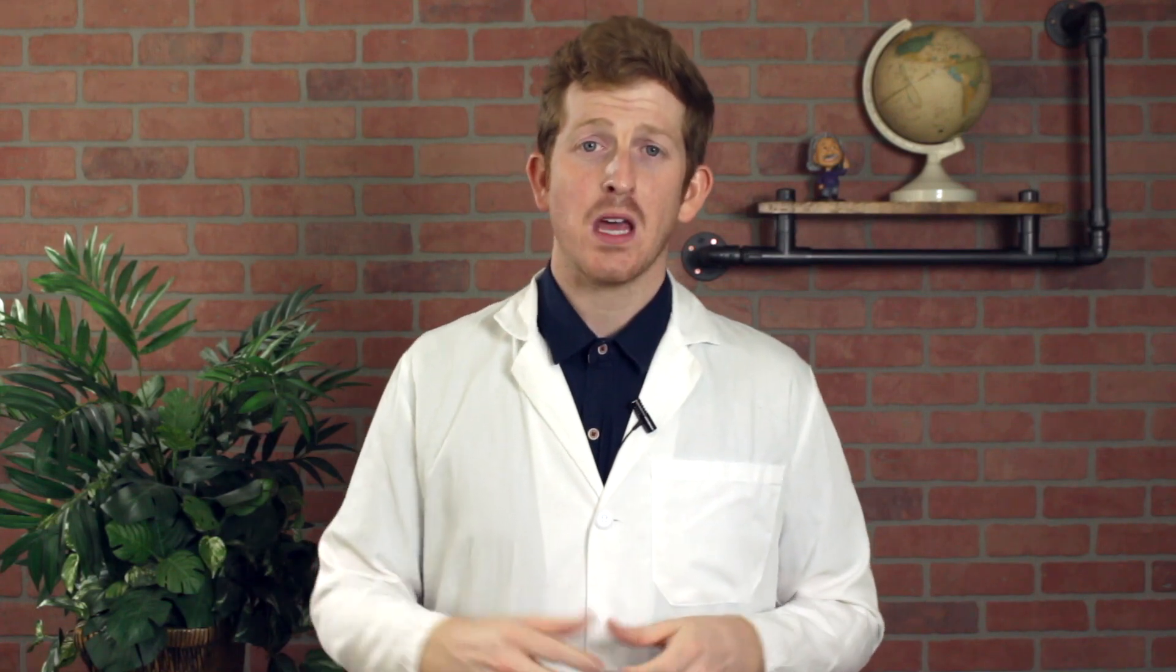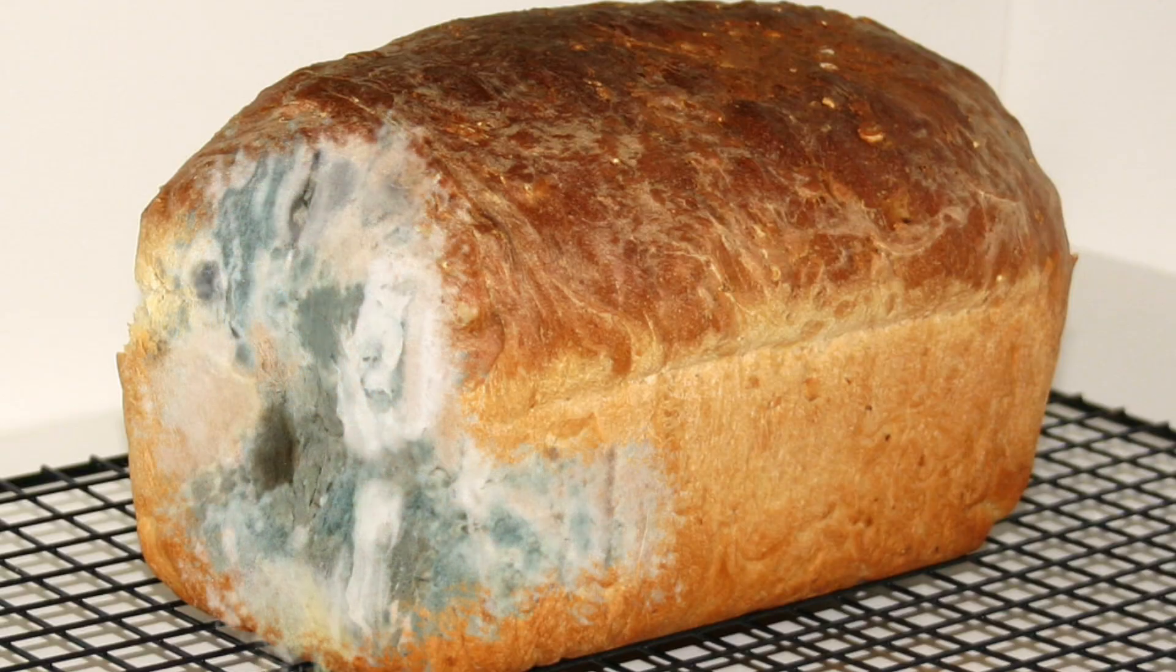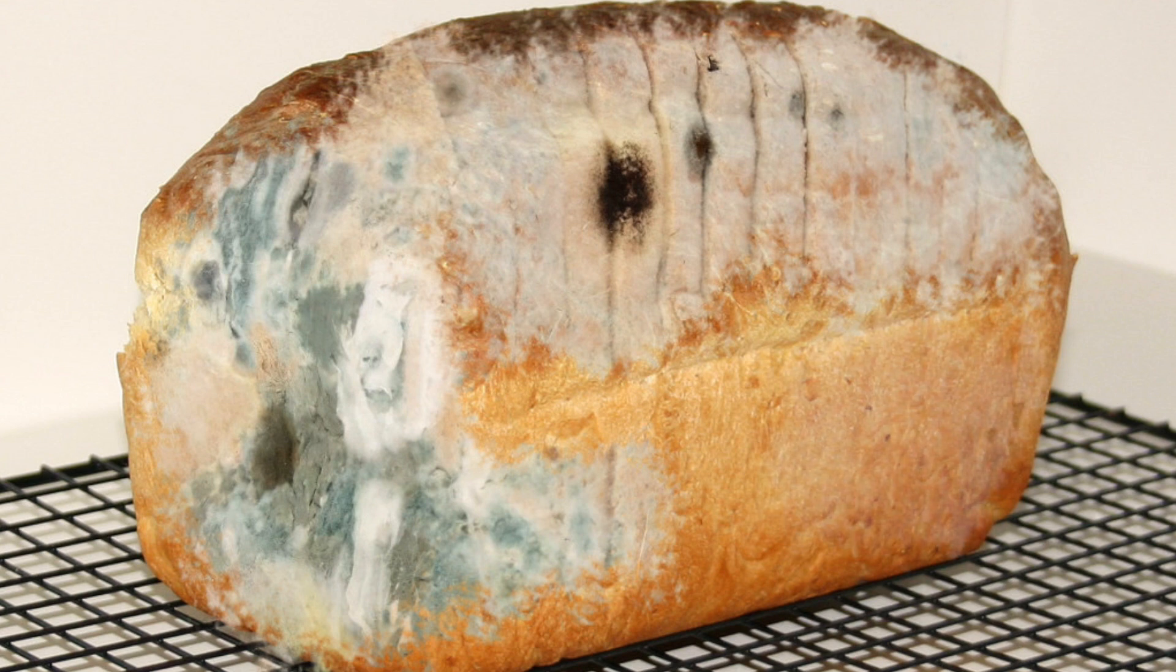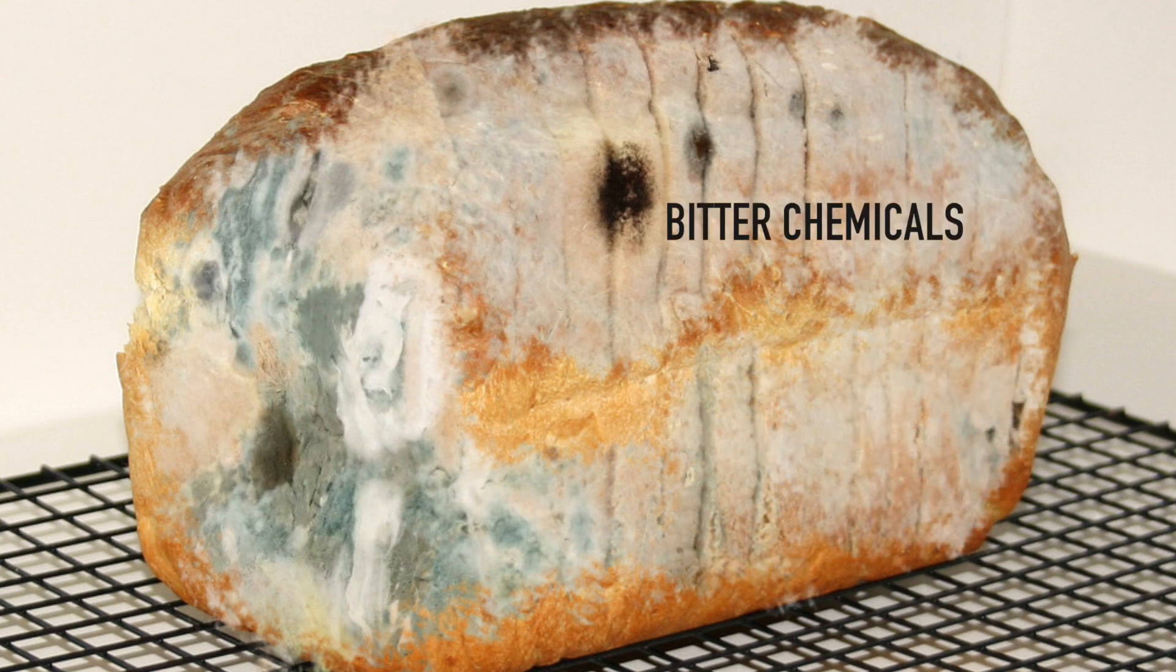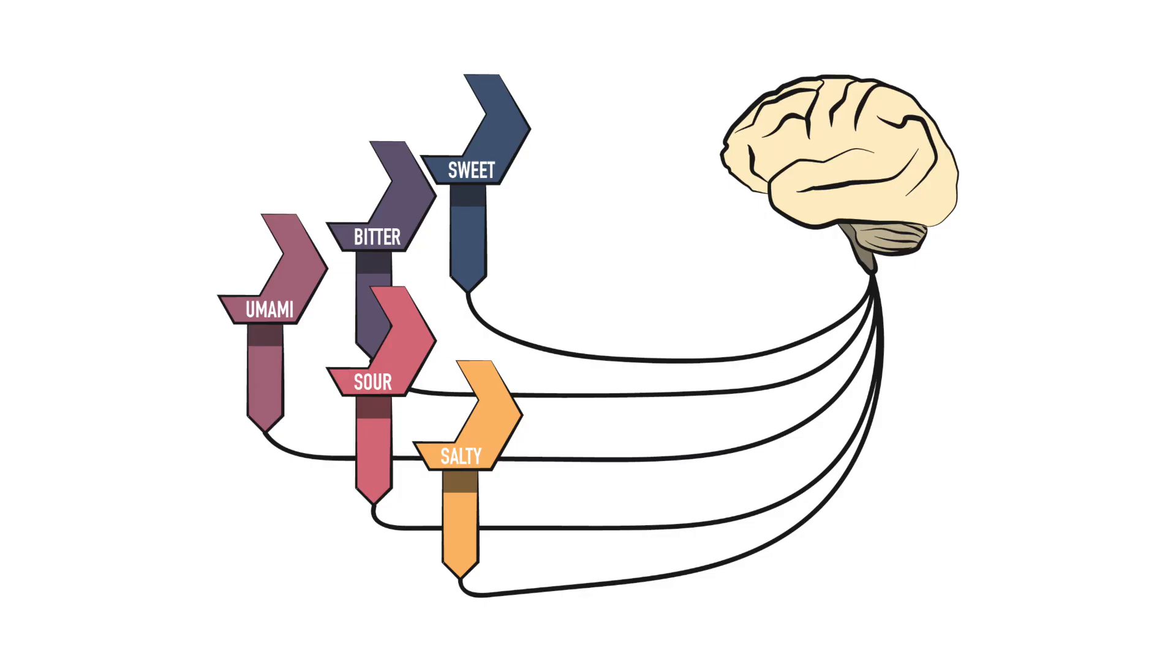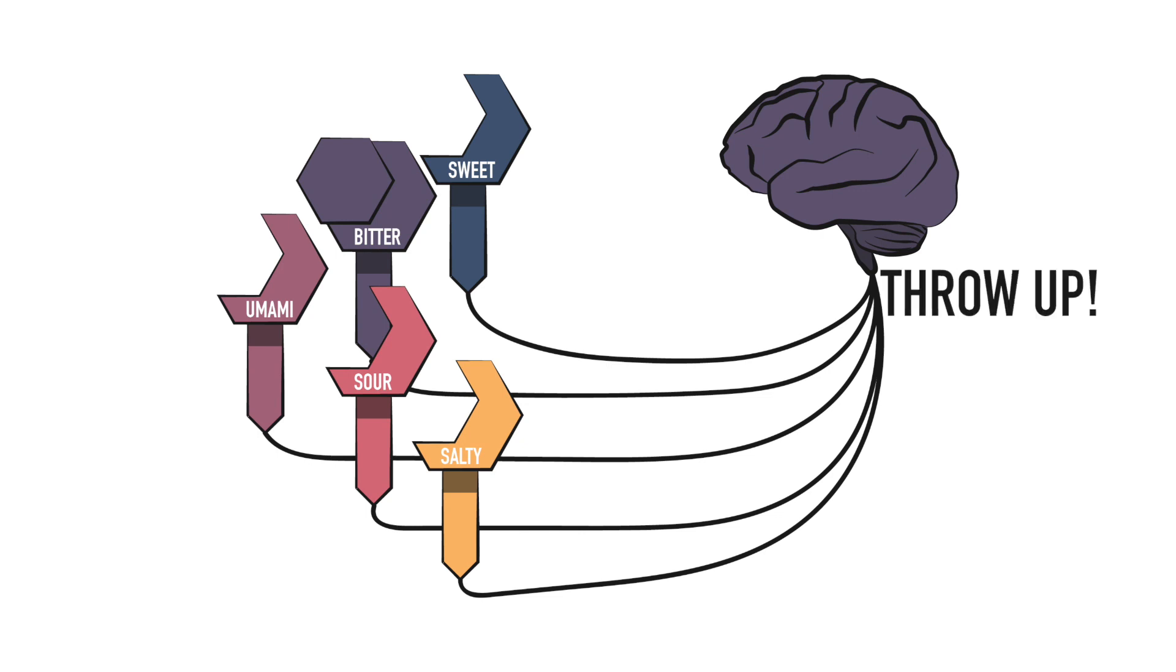Bitter taste receptors are very important to our body. If a food is rotten, covered in germs like bacteria or mold, or poisonous, it will usually have bitter chemicals on it. When our bitter taste receptors find these chemicals, they sound the alarm to our brain, usually causing us to gag, spit, or throw up the food before it can harm us.